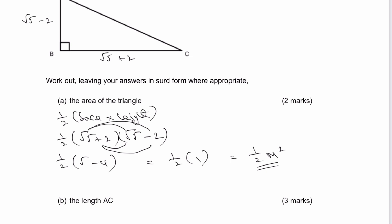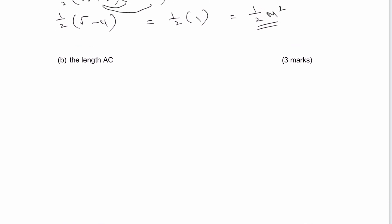And then finally, we've got the length AC. And as I mentioned before, we're looking at Pythagoras in this particular question, could easily have been SOHCAHTOA or something like that. But the length AC, well, I would use Pythagoras as a squared equals b squared plus c squared.